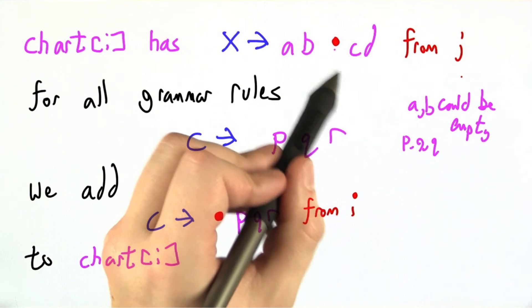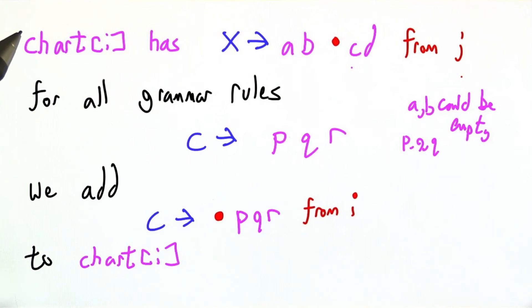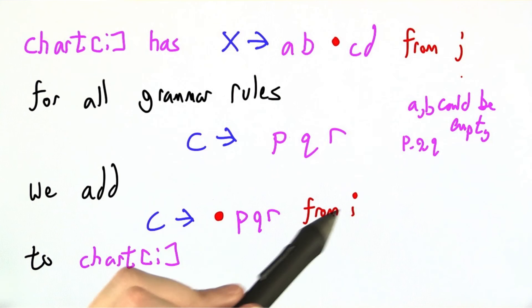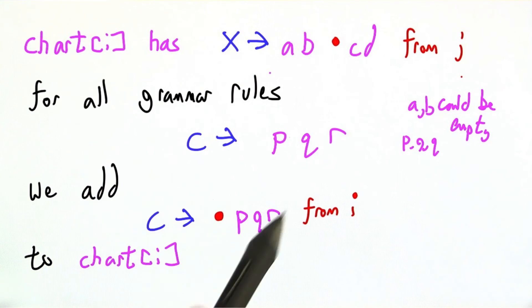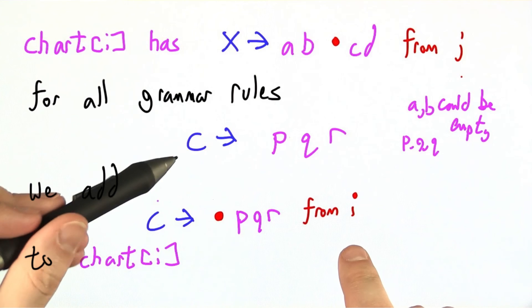So we add C goes to dot PQR. We haven't seen any part of C yet, but we think we might. It's a possibility. We're leaving our options open. We came to this idea from chart state I. That's how many sort of hidden pieces of input we're alighting before the dot. We add that to chart I. We do this for every grammar rule that starts with a C.